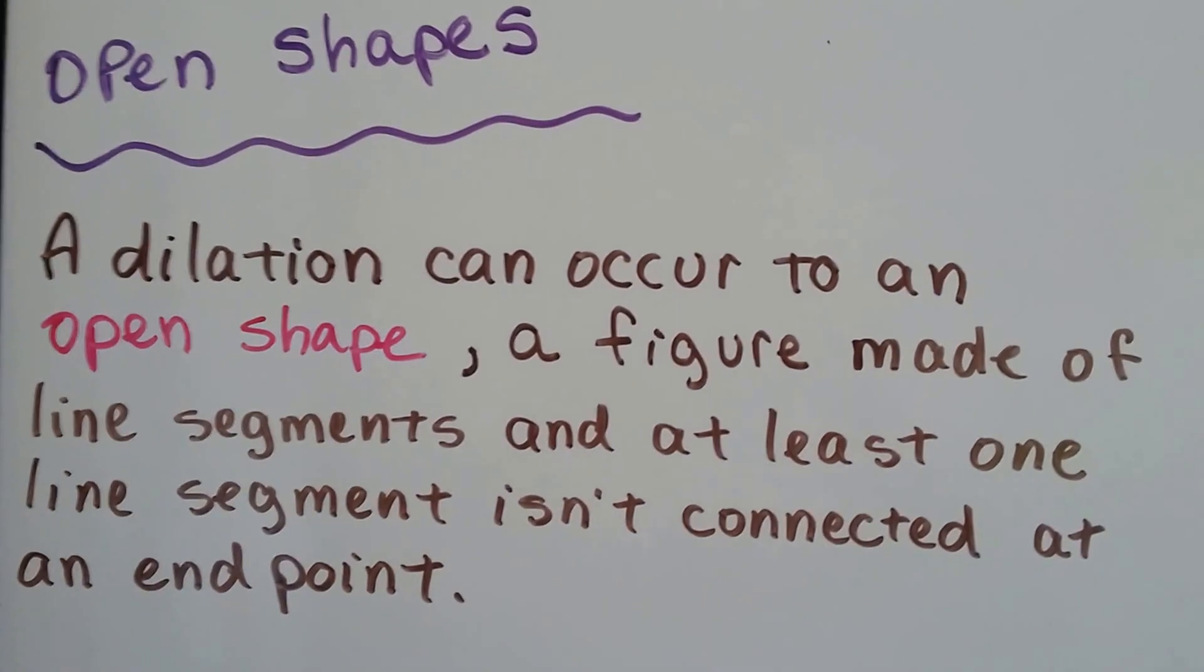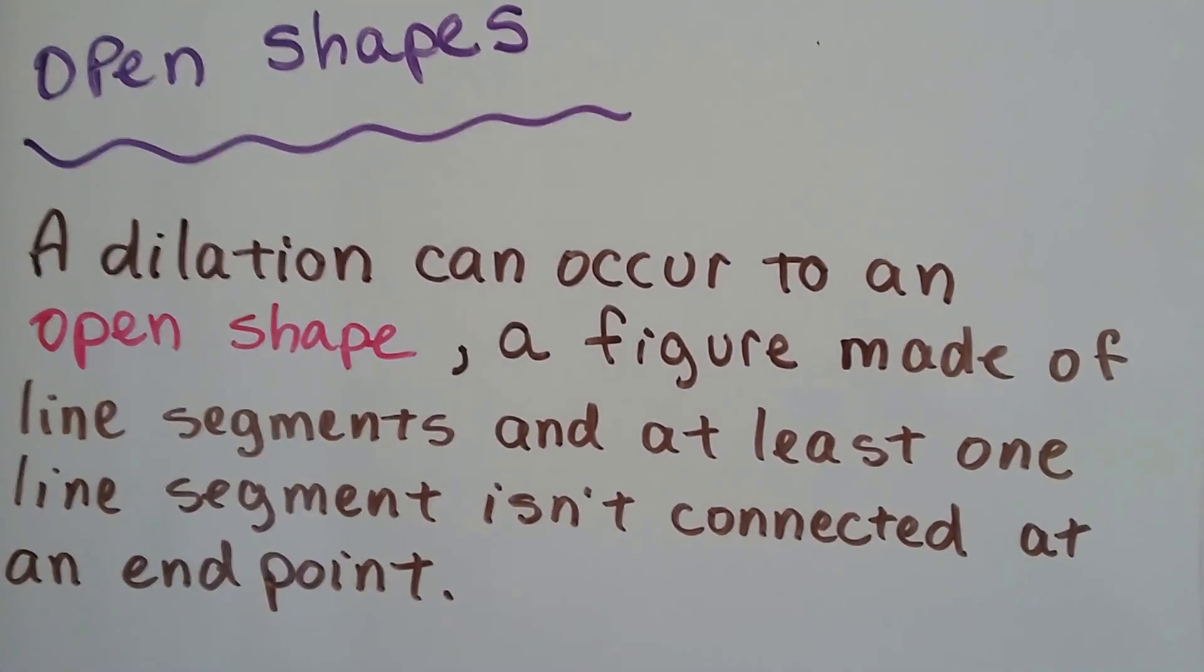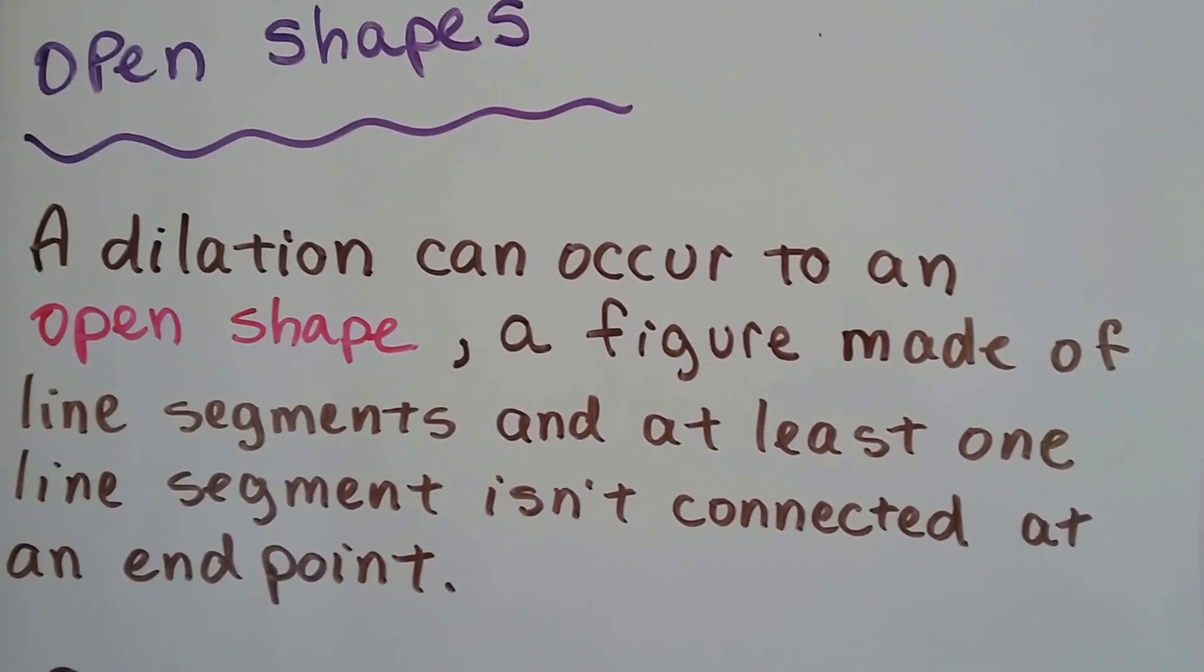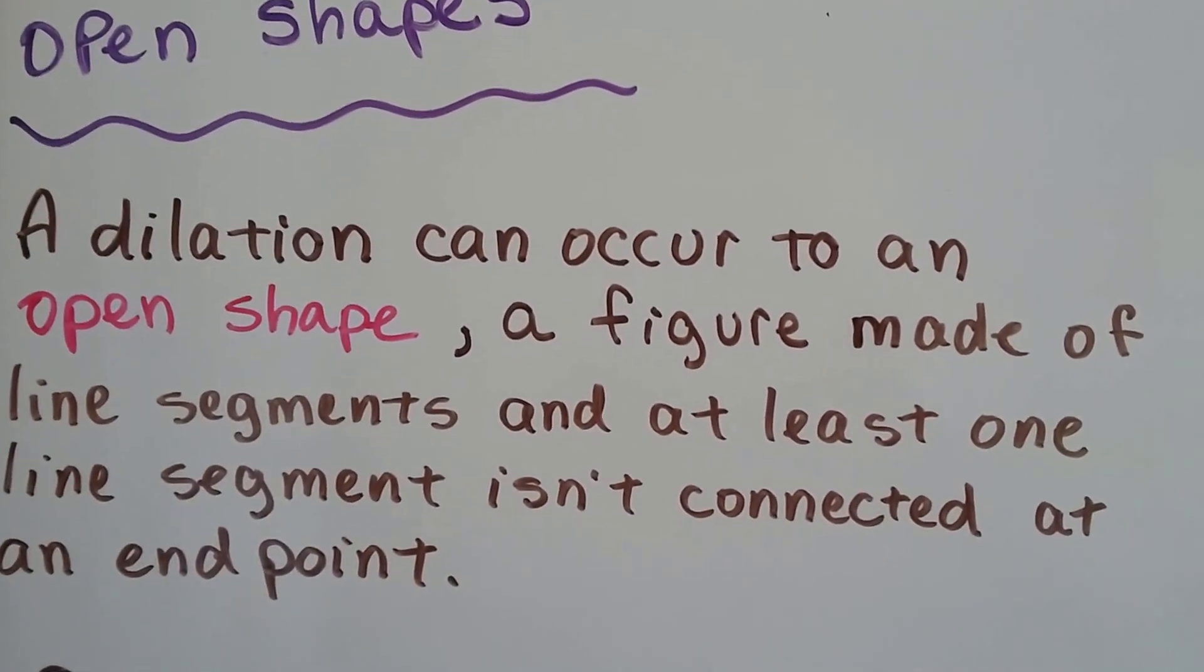A dilation can occur to an open shape. That's a figure made of line segments, and at least one line segment isn't connected at its endpoint.